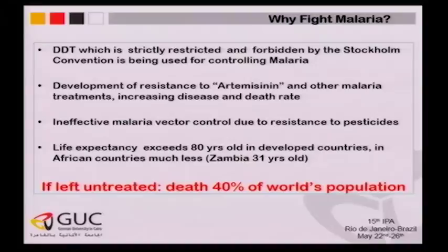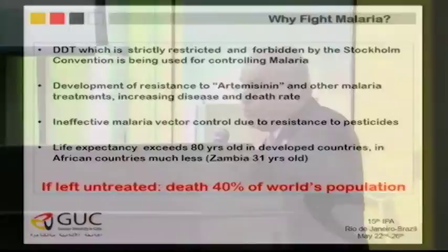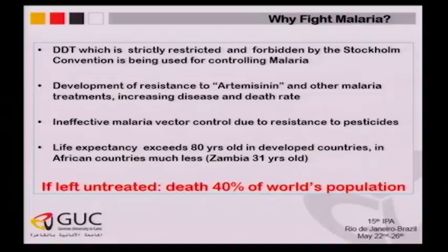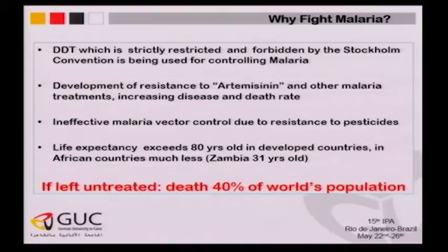Why should we fight malaria? DDT, which is strictly restricted and banned by the Stockholm Convention in 1972, is still recommended to be used in Africa. There is a lot of development of resistance to malaria medicines such as artemisinin, increasing disease and death rates. In 53 countries, it has been reported that malaria vector control is failing due to pesticide resistance. In Africa, in Zambia, the average age of death is 31 years. If malaria is not treated, about 40% of the world population will suffer death from this disease.